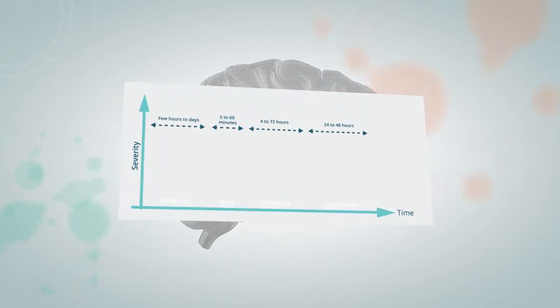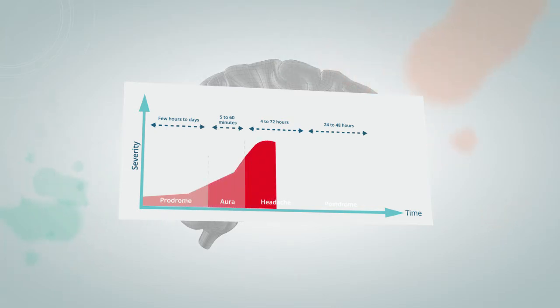A migraine attack is split into four phases: prodrome, aura, headache, and post-drome.